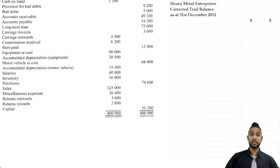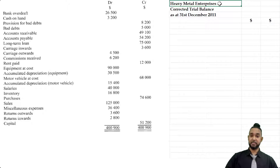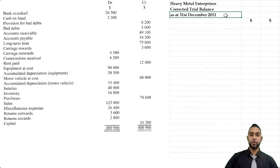Let's start. Please remember to head up whatever statement you are doing correctly: name of the entity — in this case Heavy Metal Enterprises; name of the statement — a corrected trial balance; and the period to which it applies — as at 31st December 2011.